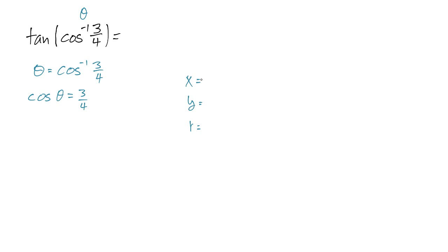Well, cosine of theta is 3 fourths and cosine is always x over r. So why don't we let x be 3 and r be 4? And then how do we figure out what y is? Well, we use our favorite x squared plus y squared equals r squared.